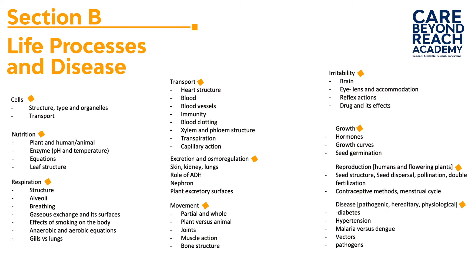After irritability we move to growth, where we look at seed structure, germination, growth curves, and how hormones influence the process of growth in plants. After growth we move on to reproduction in both plants and animals. In plants we look at pollination, seed dispersal, seed structure, and double fertilization. In human reproduction we look at the structure of the reproductive system, contraceptive methods, and the menstrual cycle.